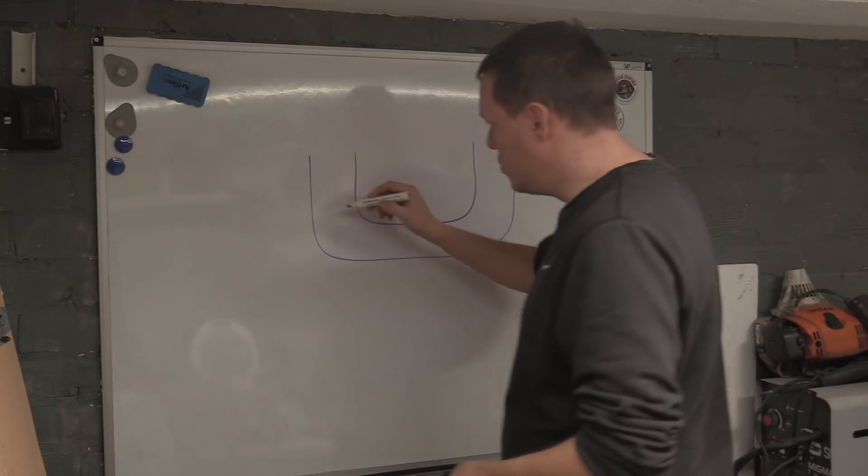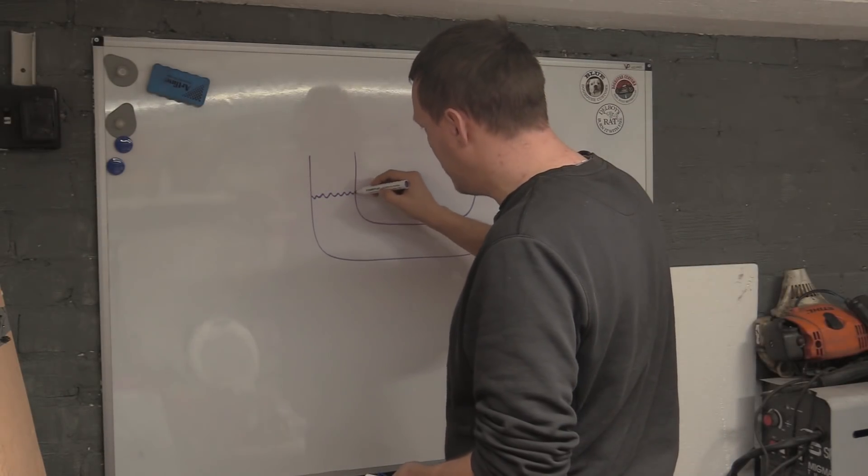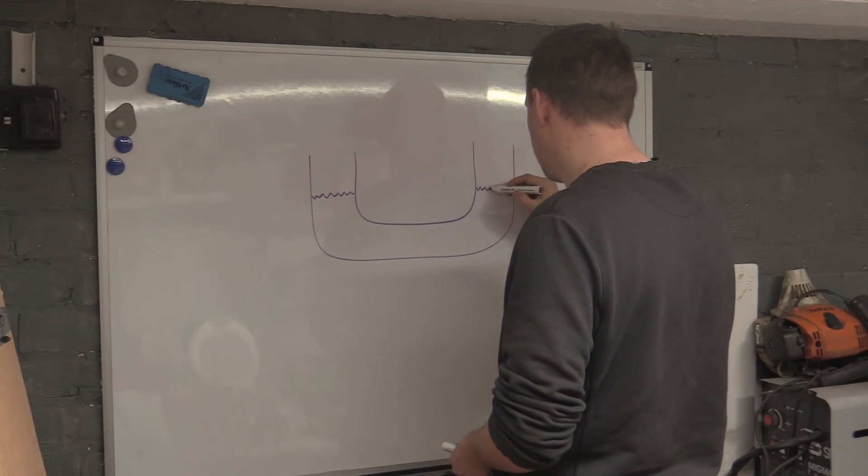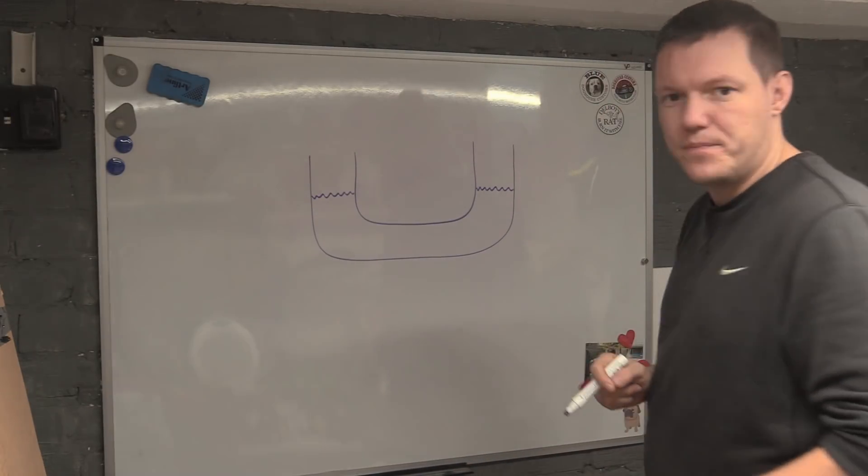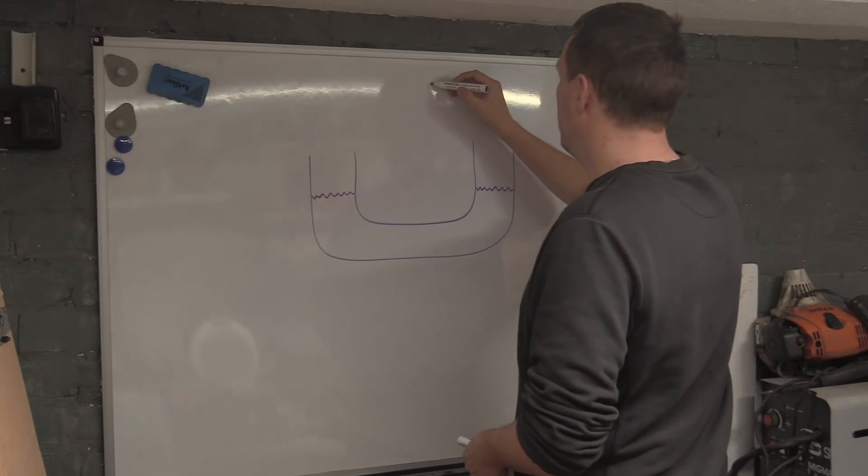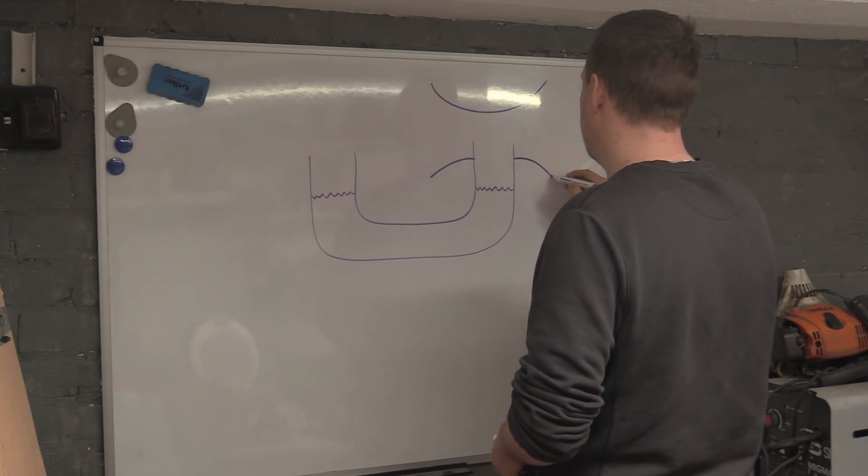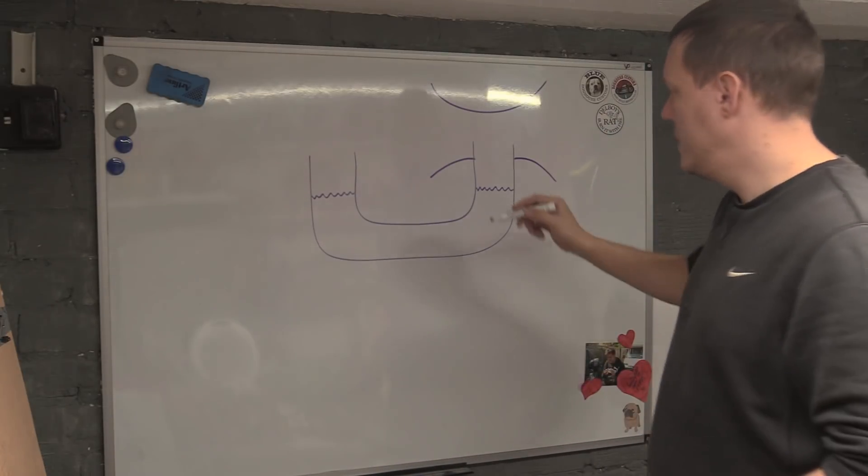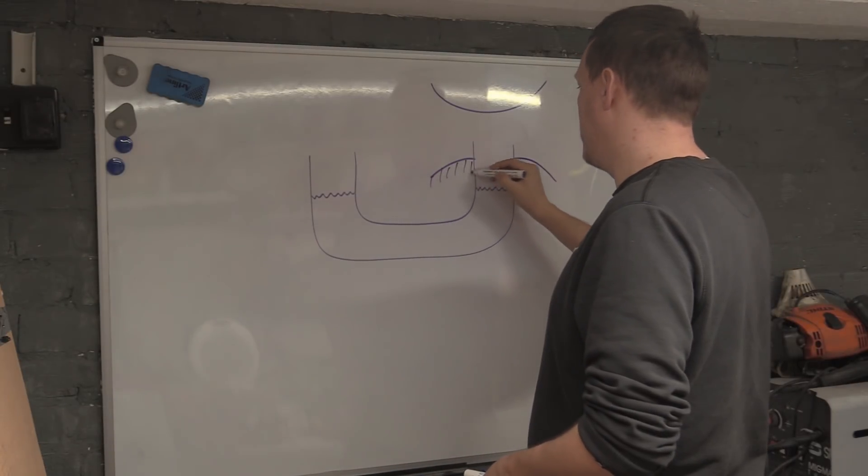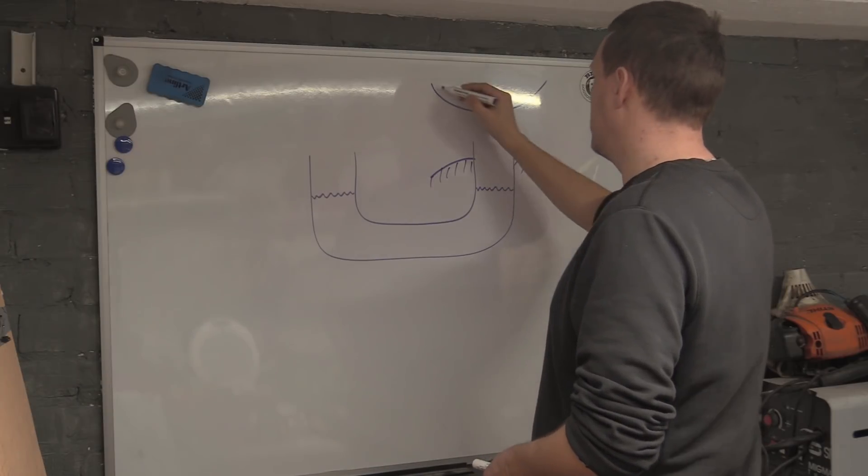Right, and in this tube we have some fluid, like so. And then in here we have a venturi. Let's give it some wall thickness so it doesn't just look like a crazy line.